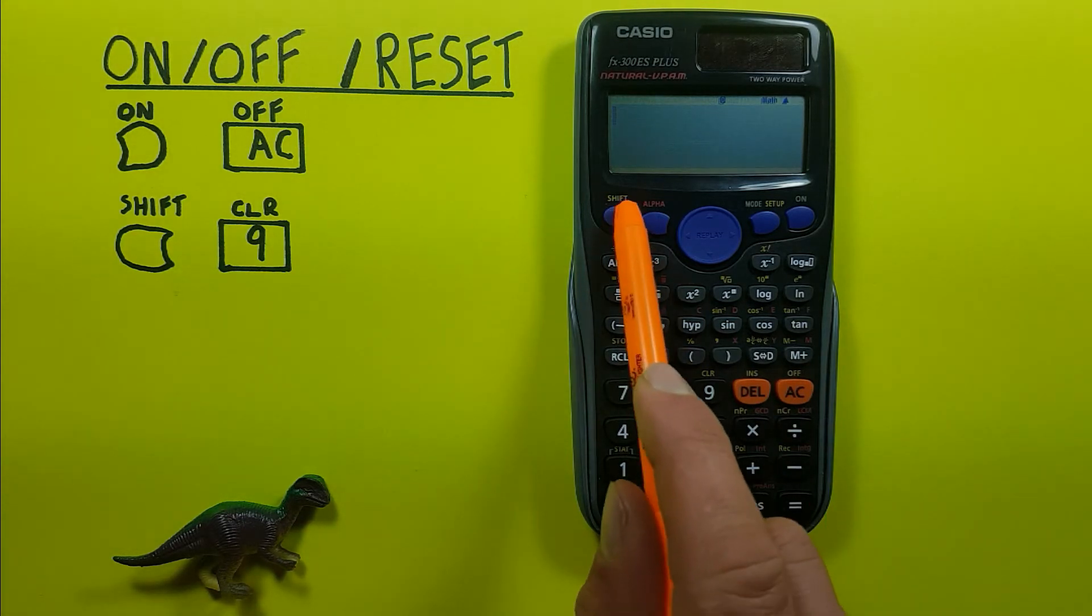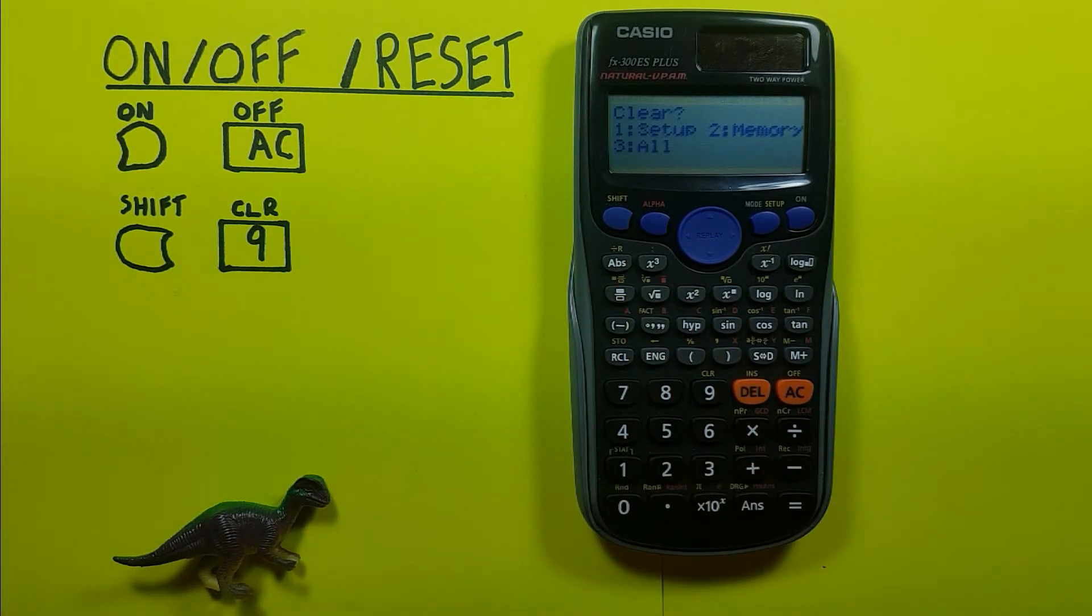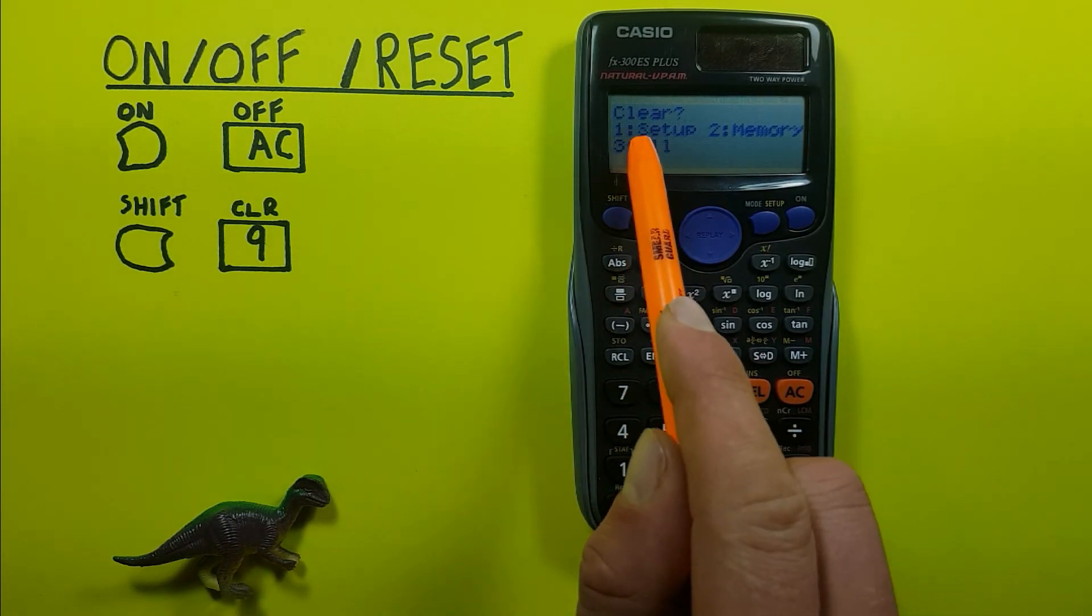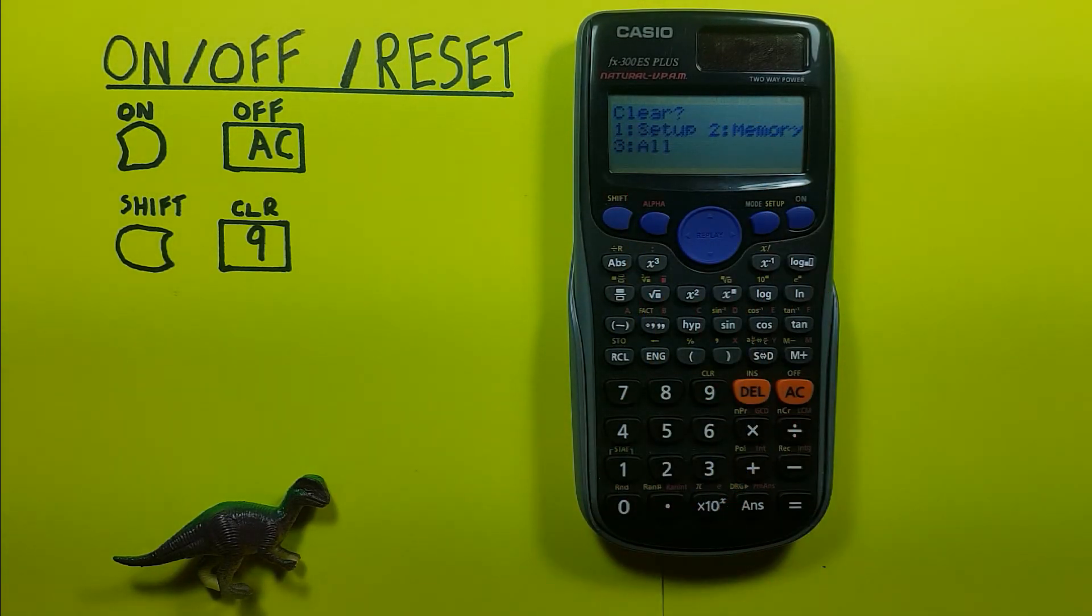And the final option for reset, if we go shift nine, is number three, all, which will do both the setup and the memory, completely returning our calculator back to its original mode. So we can press three, equals, reset all, escape key, and our calculator is back to normal.